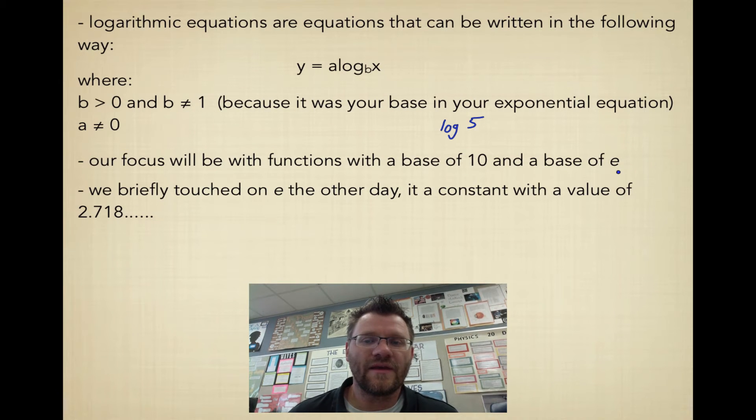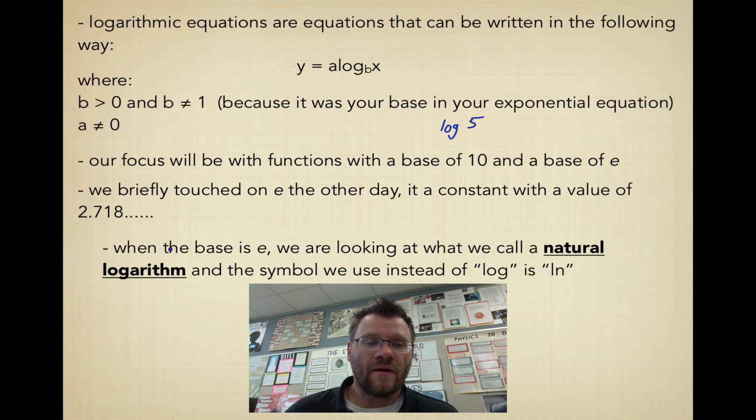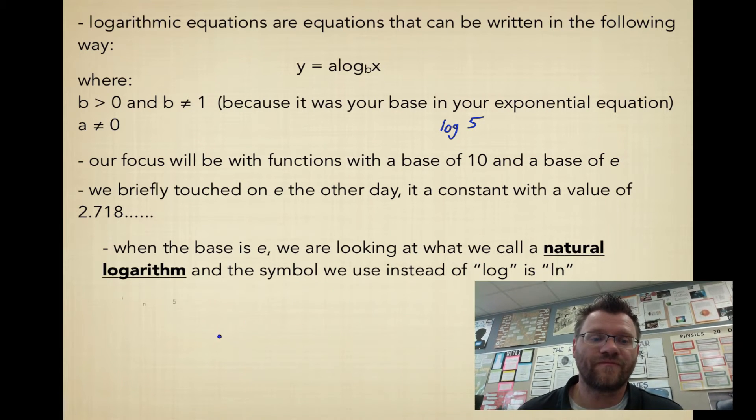e appears in nature a lot in some natural things. So you always get e popping up in exponential equations and also logarithmic equations, and a lot in calculus as well. So when the base is e, we're looking for what we call a natural logarithm. And so instead of using the log button in your calculator, you might have an ln button. And that just means that when you're using a base of e, you use ln. If you're using a base of 10, you use log. And so instead of writing log_e(5), we just write ln(5).